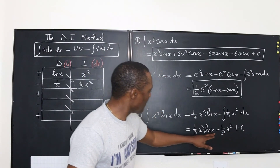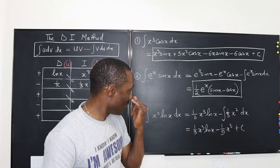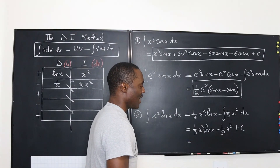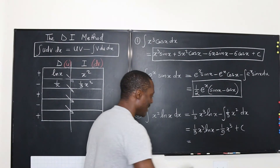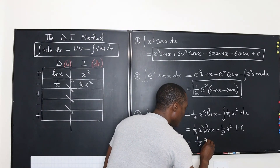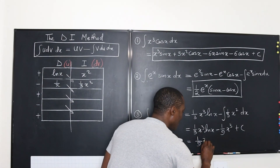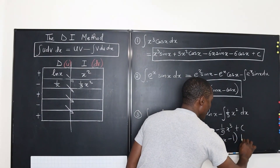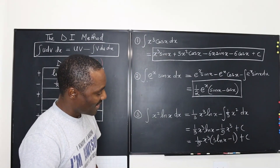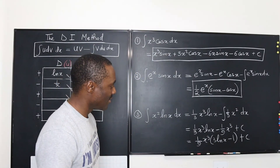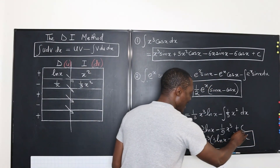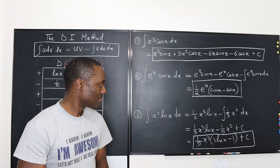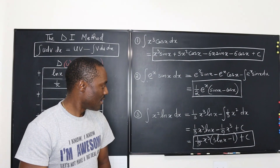You can actually factor this out. We're going to have one ninth X cubed times (3 ln X minus 1), plus C. That's what we get as our final answer. And that's it.